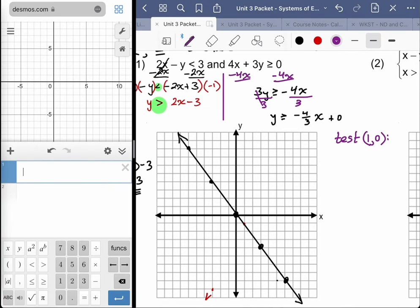You plug in the 1, you plug in the 0. So 0 goes in for Y, the 1 goes in for X. Plus 0 is indeed bigger than negative 4 thirds, so that's a true sentence. So 1, 0 is on this side, so it's in this neighborhood over here. So I should be shading my graph.